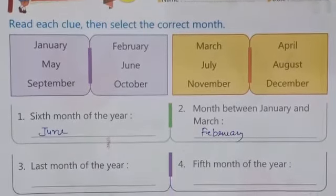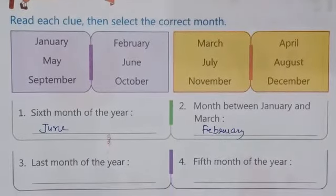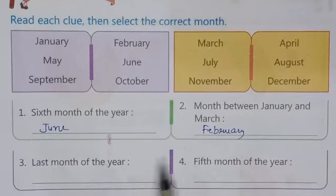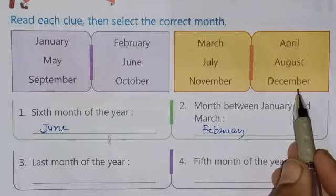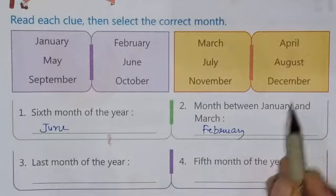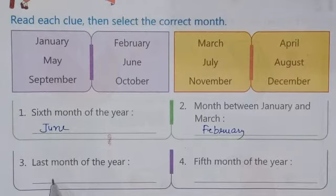Question number three: the last month of the year. This is the last month — the month of December. So write down December.